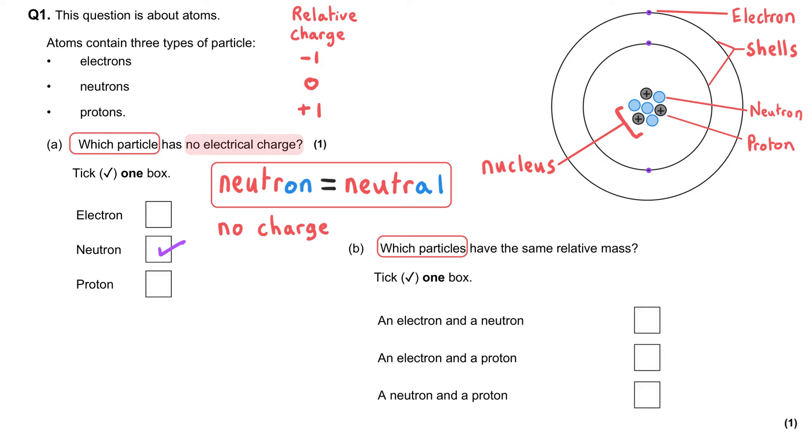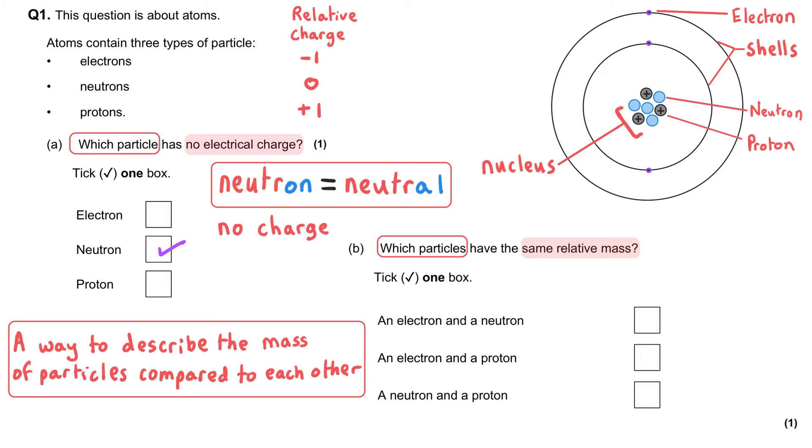Which particles have the same relative mass? Now relative mass is a way to describe the mass of particles compared to each other, which is really useful because we don't need to know how heavy each of these particles are individually, but we're comparing them to each other.